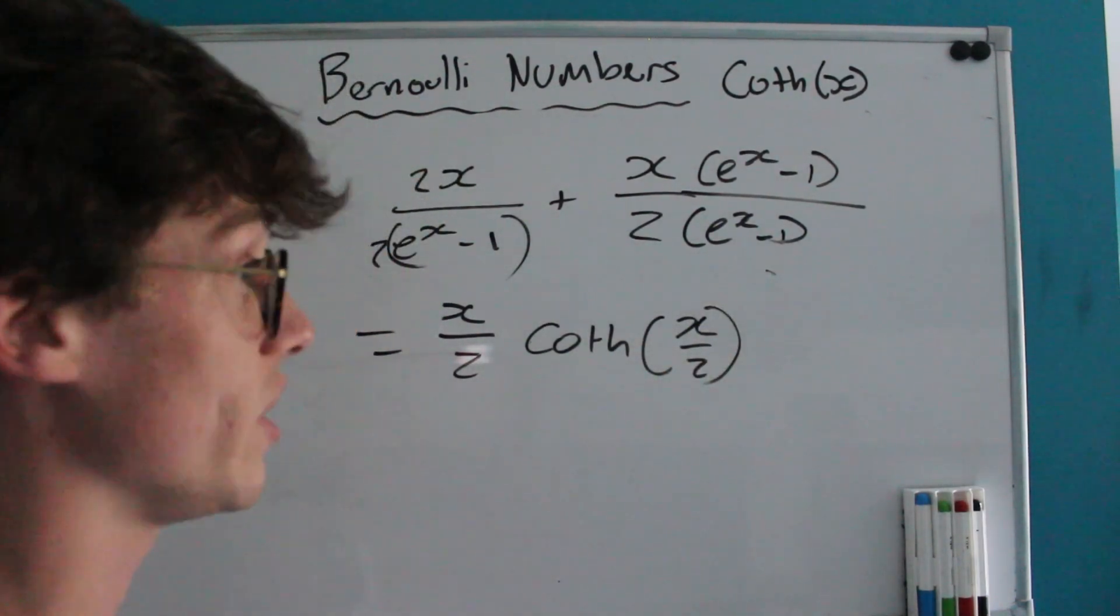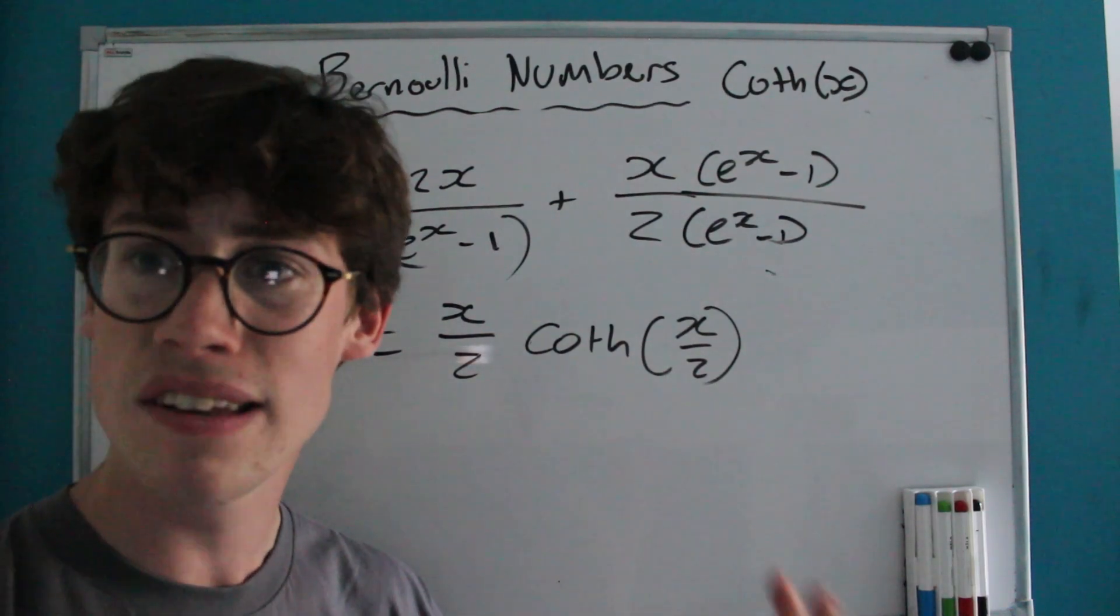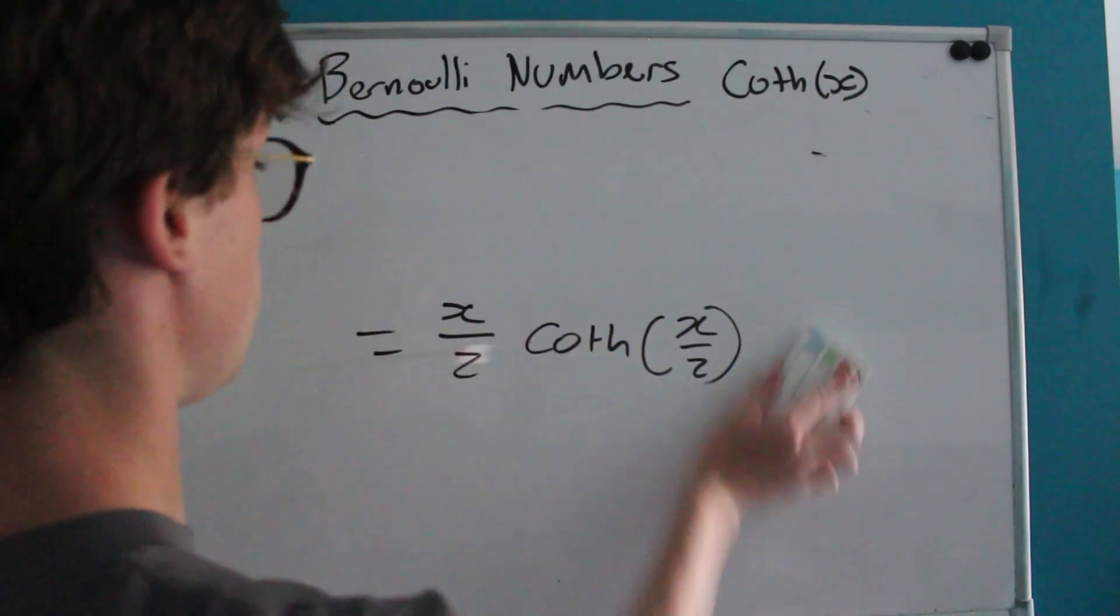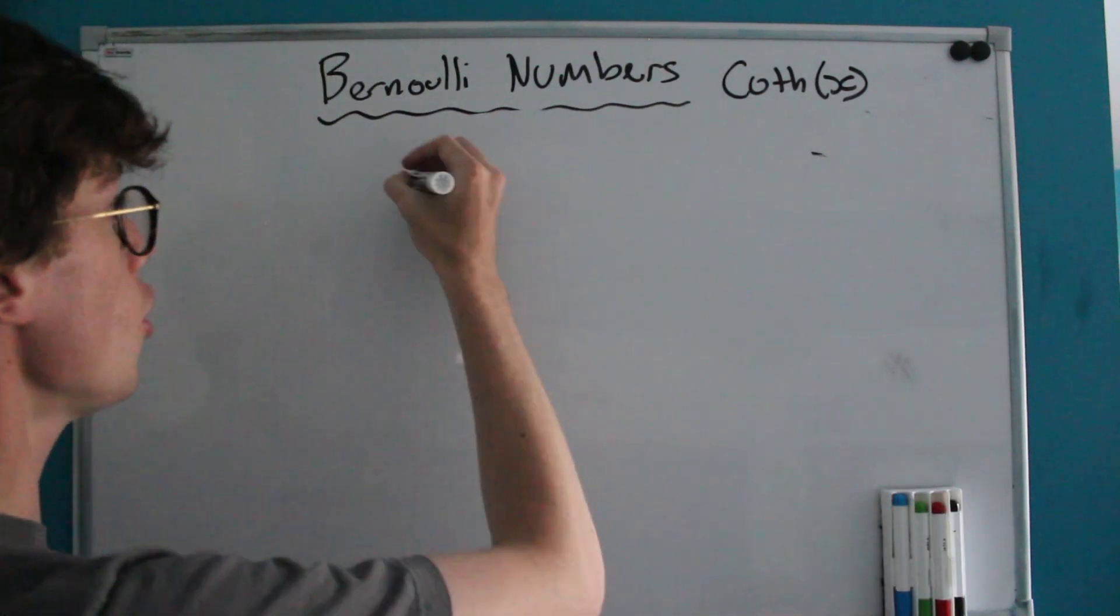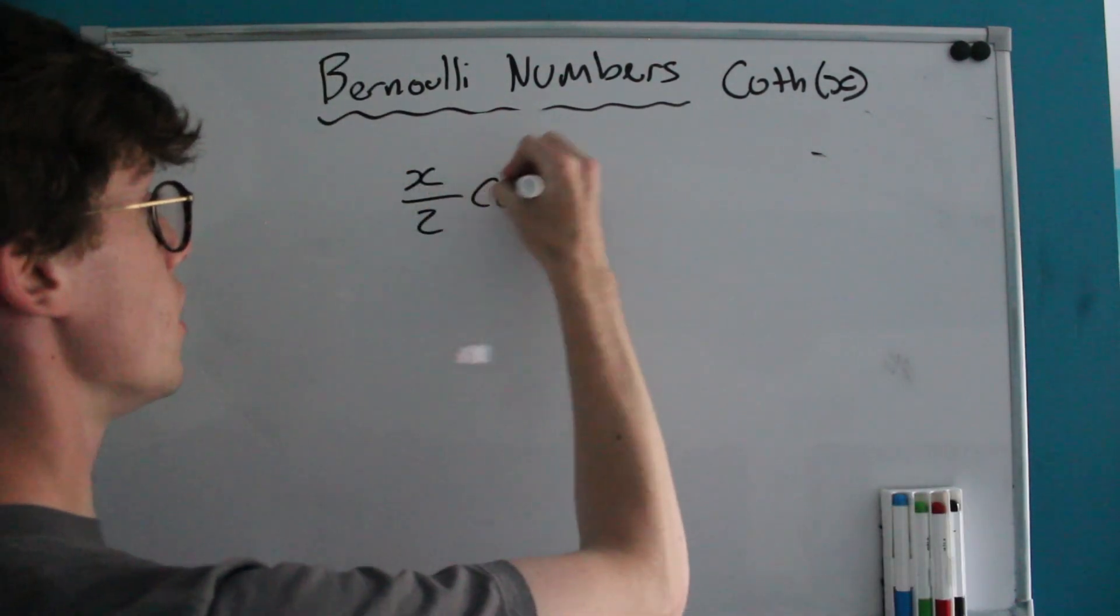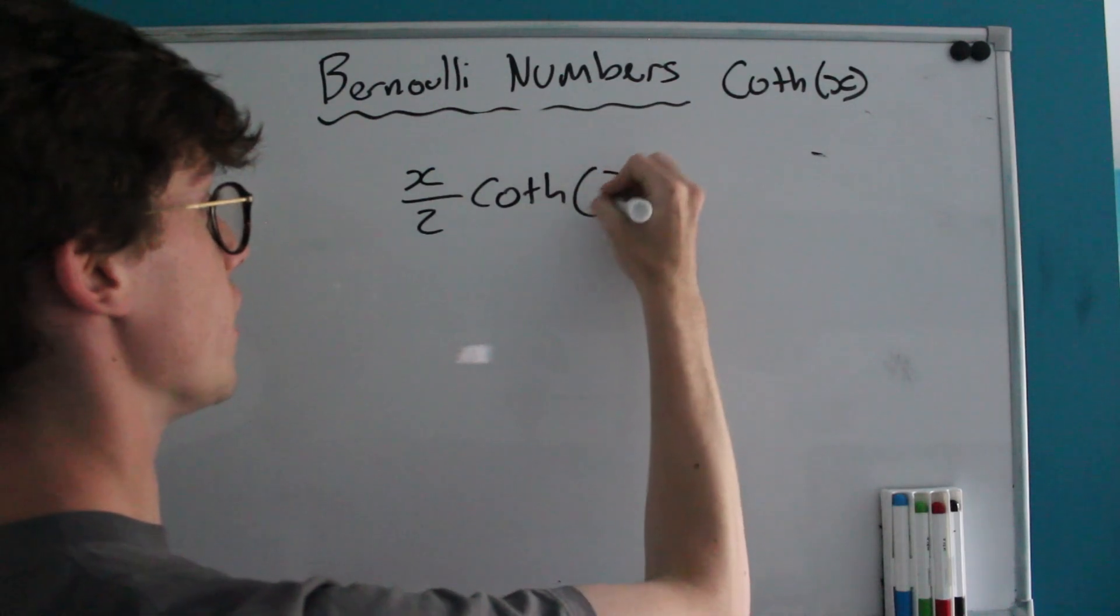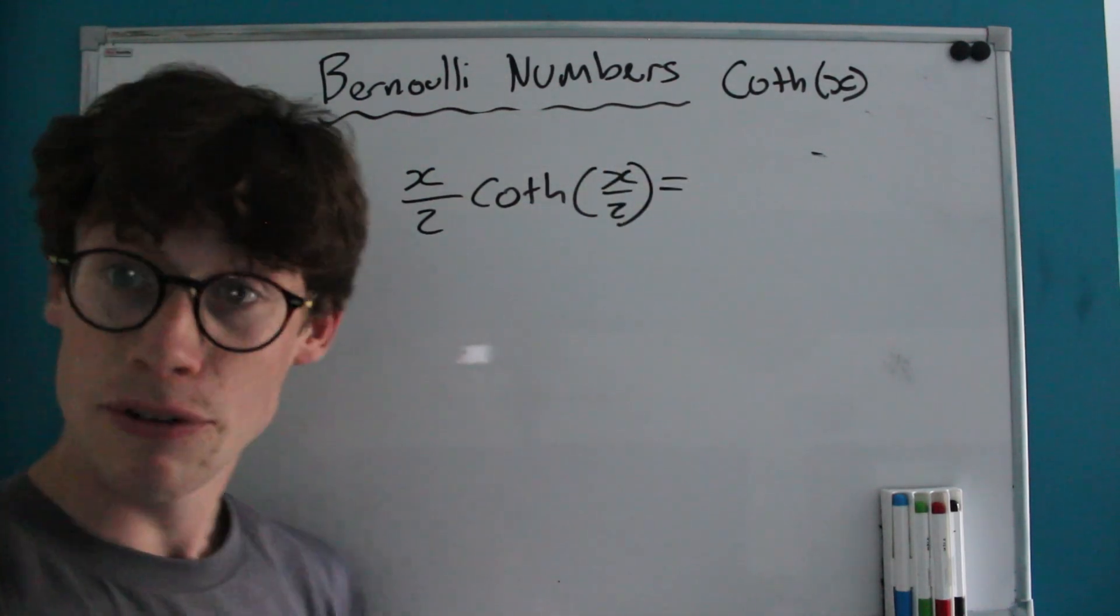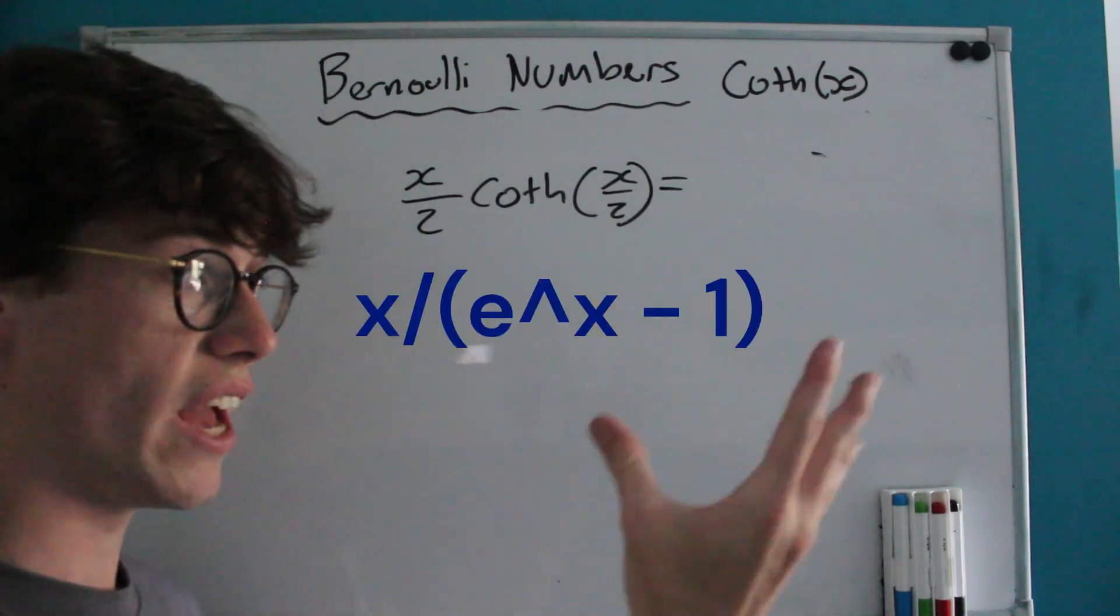It's going to lead us to what the aim of this video is, which is to find a McLaren series for hyperbolic cotangent. Let's see if we can do it. We know that X/2 times hyperbolic cotangent of X/2...